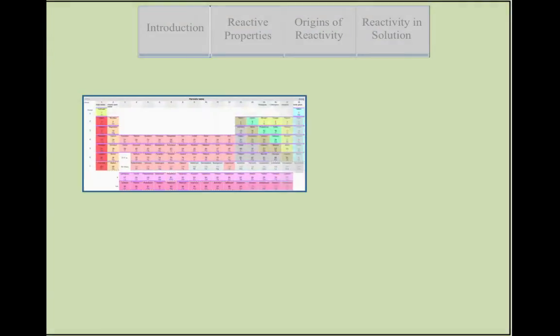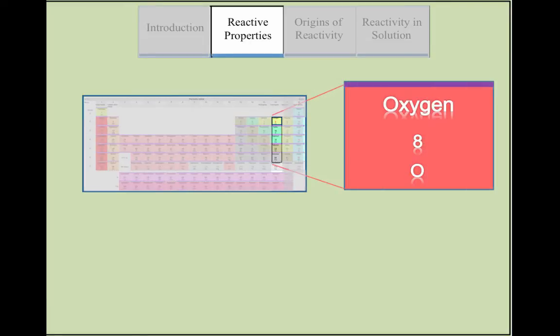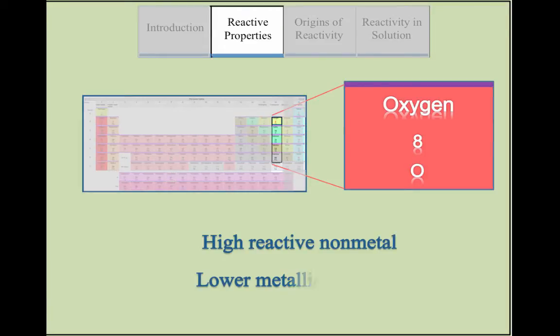Situated on the upper right-hand corner of the periodic table, oxygen has high electronegativity and electron affinity. Oxygen is a highly reactive nonmetal but has lower metallic character when compared with other elements.